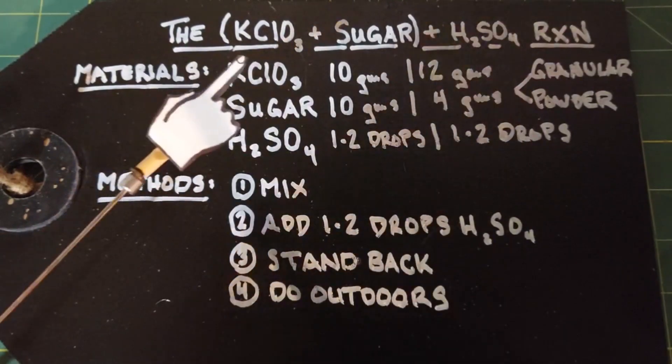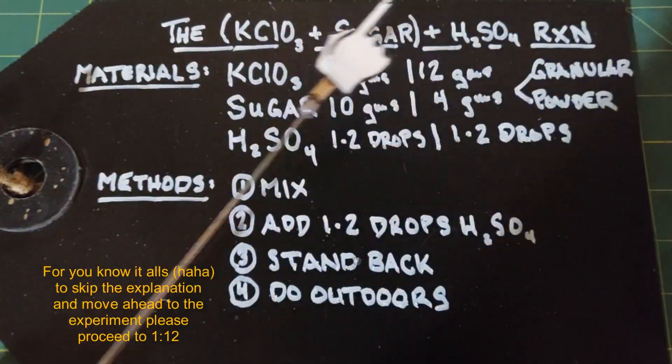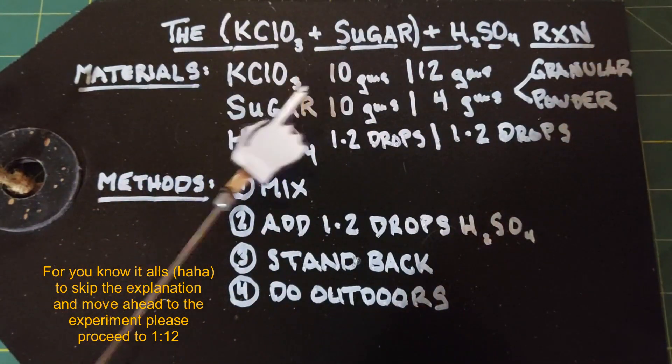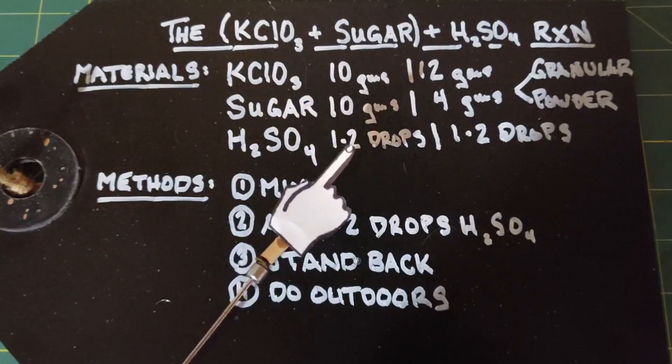This video is going to be a little bit on the short side, but it's fun. It's a reaction using potassium chlorate and sugar and then sulfuric acid. So our materials that we need for this are potassium chlorate, 10 grams, sugar, 10 grams, and just a couple drops of sulfuric acid.